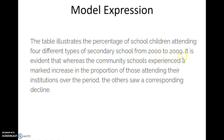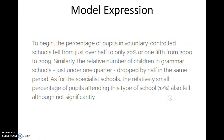The table illustrates the percentage of school children attending four different types of secondary schools from 2000 to 2009. It is evident that whereas community schools experienced a marked increase in the proportion of those attending over the period, the others saw a corresponding decline. The percentage of pupils in voluntary controlled schools fell from just over half to only 20% or one fifth. Similarly, the number of children in grammar schools, just under one quarter, dropped by half in the same period.